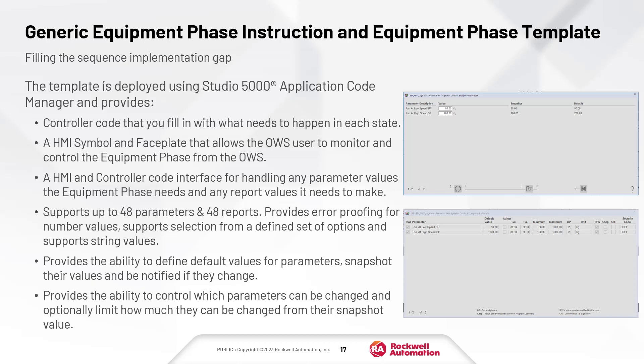It supports up to 48 parameters and 48 reports, and provides error proofing for number values, supports selections from a defined set of options, and supports string values. It provides the ability to define default values of parameters and snapshot parameter values, then notify you if parameters change from the snapshotted value. It also provides the capability to control which parameters can be changed and optionally limit how much they can be changed from their snapshot value.